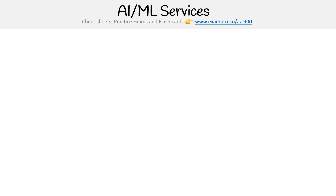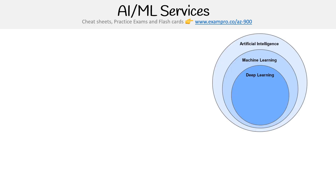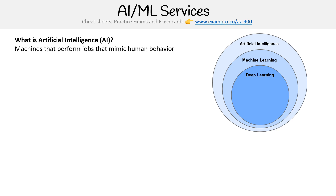Hey, this is Andrew Brown from Exam Pro, and we are looking at artificial intelligence and machine learning services on Azure. A great way of describing that is to always have this graphic here, where we have this onion diagram where each layer is dependent on the other. We'll start with artificial intelligence.